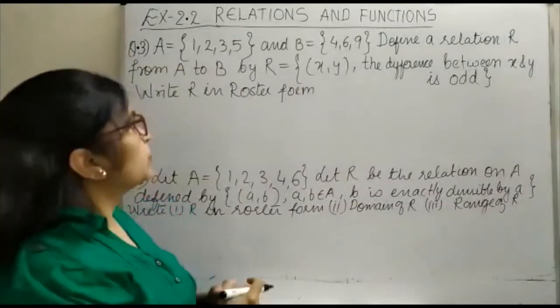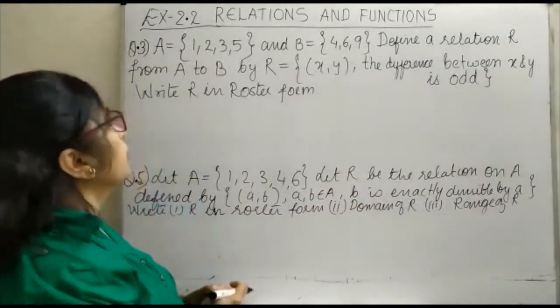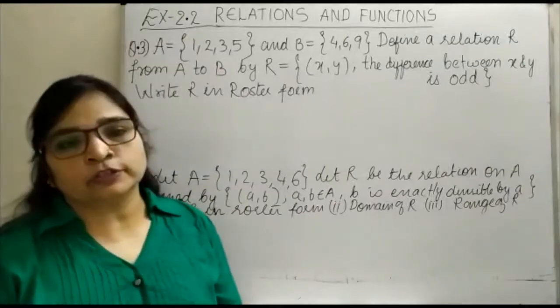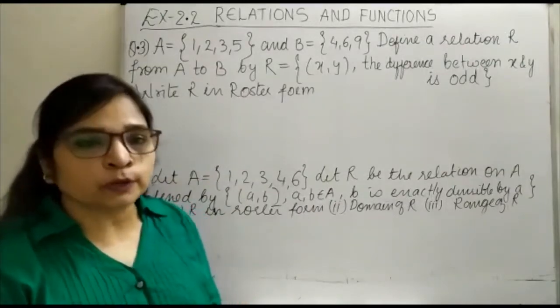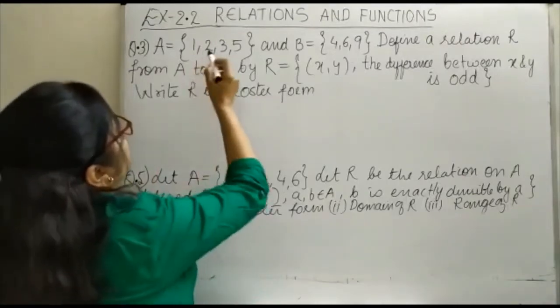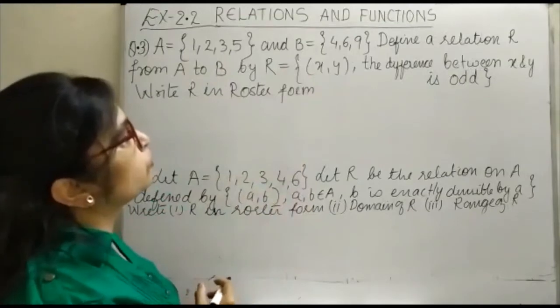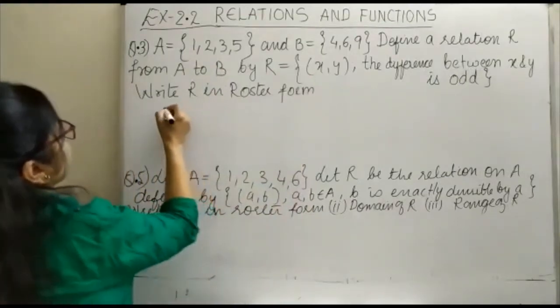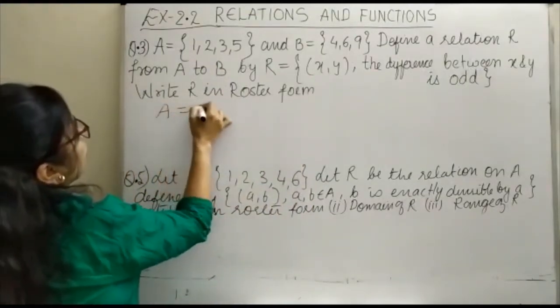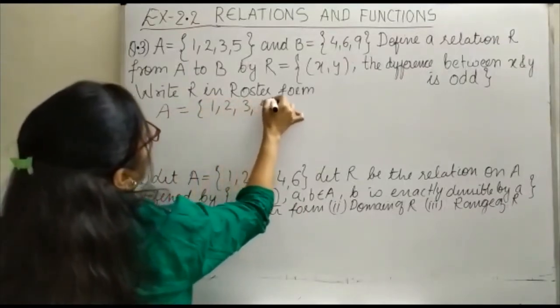Hello everyone, welcome to another session on relations and functions. We are here with two different questions from exercise 2.2. Question number 3: Let A = {1, 2, 3, 5} and B = {4, 6, 9}. So your A is {1, 2, 3, 5} and your B is {4, 6, 9}.